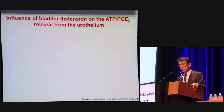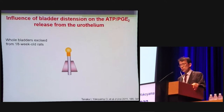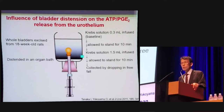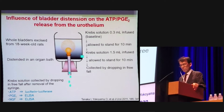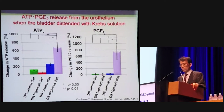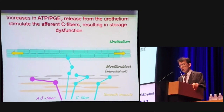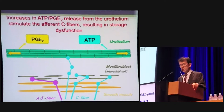To investigate the influence of bladder distension on ATP and PGE2 release from the urothelium, whole bladders were excised from 8-week-old rats. Bladders were distended in an organ bath: 1.5 mL Krebs solution was infused and allowed to stand for 10 minutes. Krebs solution was collected after removal of the syringe. ATP and PGE2 release from the urothelium was significantly higher in DS rats fed a high-salt diet.